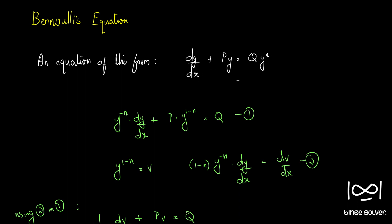So these are the equations reducible to linear form. The general form is f'(y)·dy/dx + P·f(y) = Q. Bernoulli's equation is a special case where the equation is of the form dy/dx + Py = Q·y^n. We will be solving questions from this section in the next video onwards.